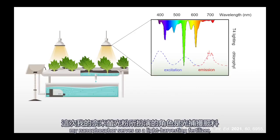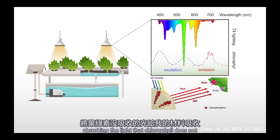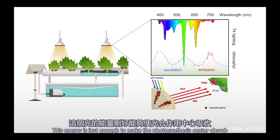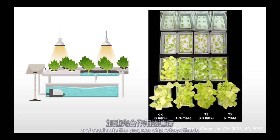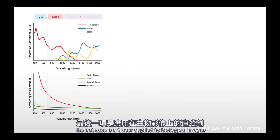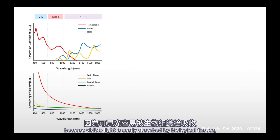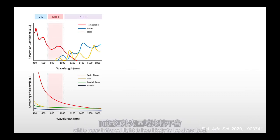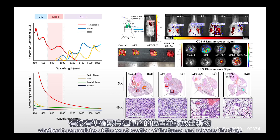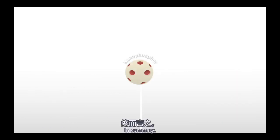In the latter case, my nanophosphor serves as a light-harvesting fertilizer, absorbing the light that chlorophyll does not and converting it into near-infrared light. This energy is just enough to make the photosynthesis center absorb and accelerate the progress of photosynthesis. The last case is a tracer applied to biological imaging. Because visible light is easily absorbed by biological tissues, near-infrared light is less likely to be absorbed. We can see where the substance we are carrying is transported through our nanophosphor, whether it accumulates at the exact location of the tumor and releases the drug.